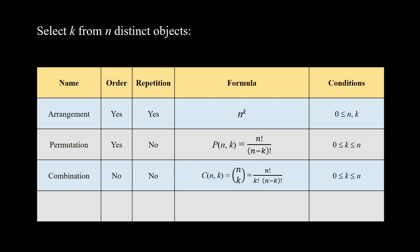The fourth one is combination with repetition: here the order is not important but repetition is allowed. The formula is n plus k minus 1 choose k, which equals n plus k minus 1 factorial over k factorial times n minus 1 factorial. The condition is 0 ≤ n and also k.